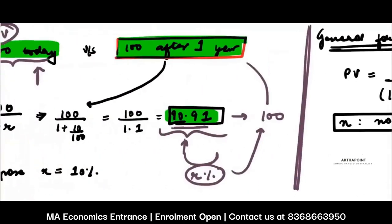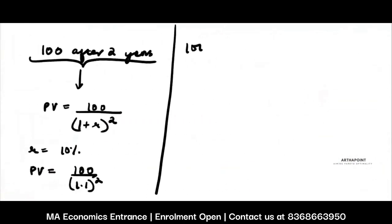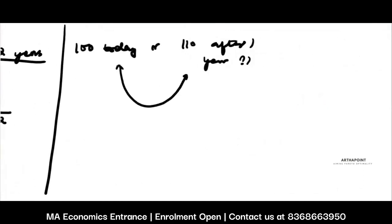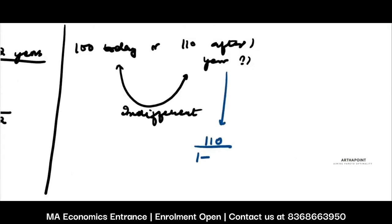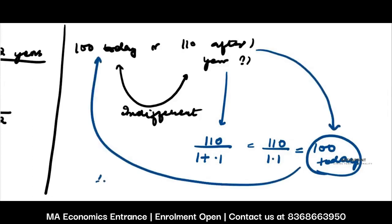Now suppose I give you one more part: will you prefer 100 today or 110 after one year? The answer is you will be indifferent. Why? Because 110 after one year has its present value as 110 / (1 + 0.1) = 110 / 1.1, which is exactly 100 today. So the present value of 110 after one year is the same as 100 today, and therefore you will be indifferent.